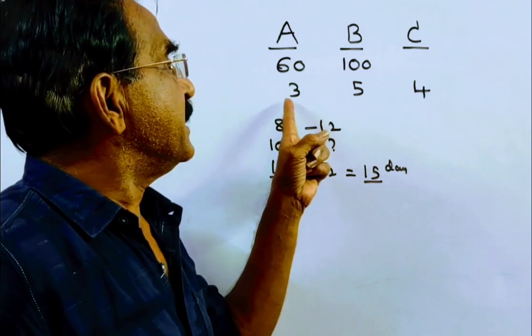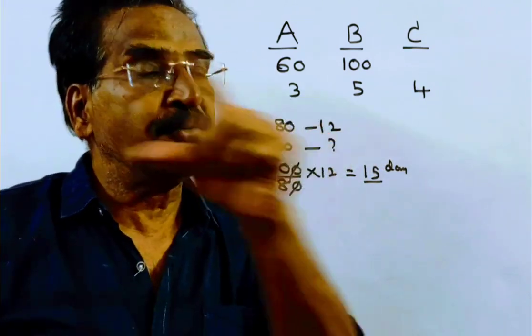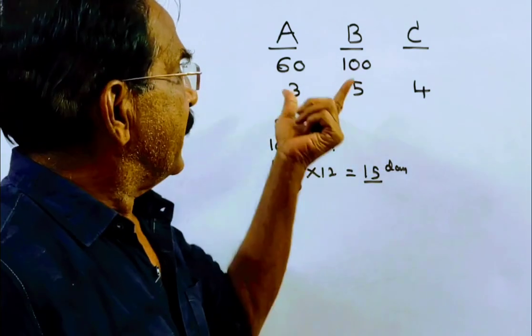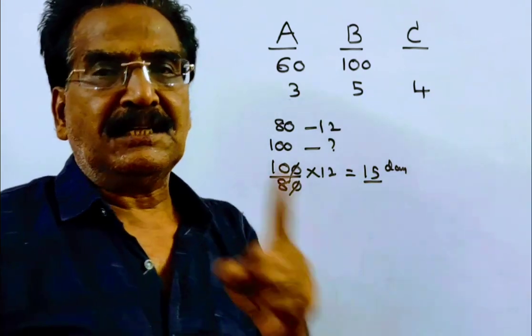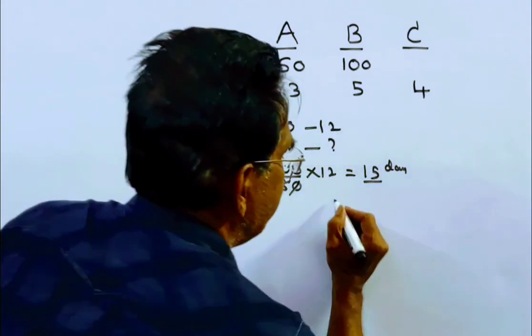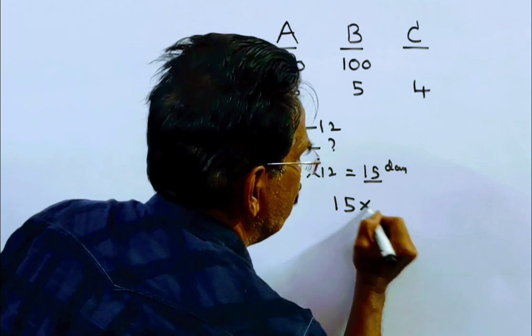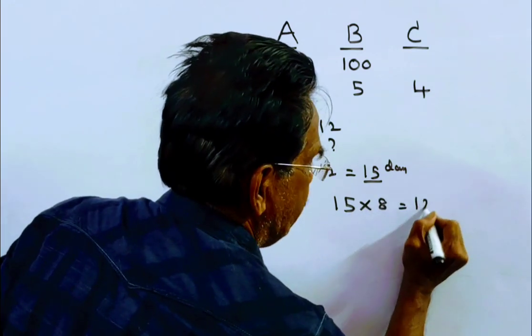That means friends, A and B together can do 8 units of work per day. They completed the work in 15 days means the total work is 15 into 8, 15 into 8, 120 units.